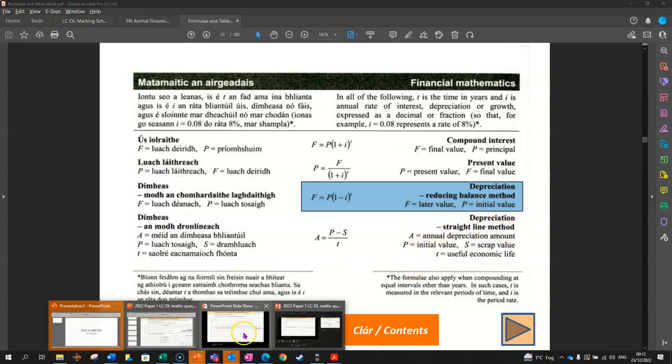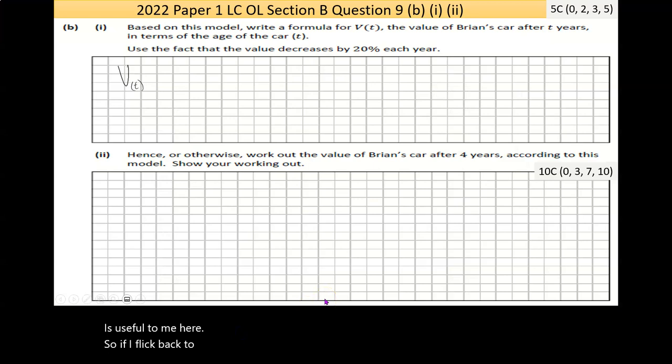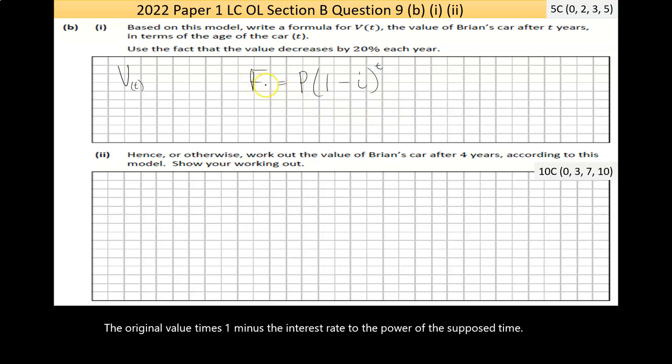If I flick back to the actual notes here, F is equal to the original value times 1 minus the interest rate to the power of time. That's the final value. We don't want to actually work anything out here.